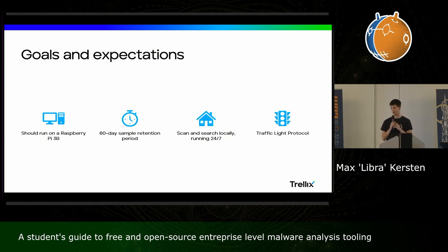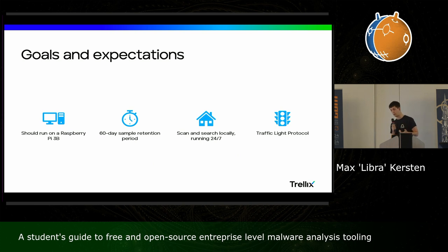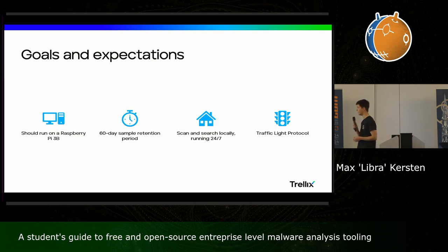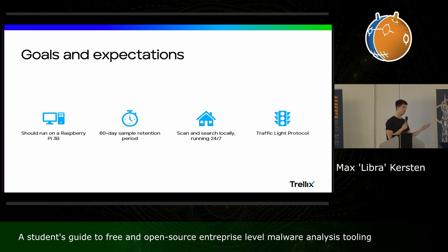What I usually use as a benchmark is a Raspberry Pi I have under my desk. It's a Raspberry Pi 3B with one gigabyte of memory, and I was aiming for roughly a 60-day sample retention period. The goal is that you can run this locally at home — whether you're a student, startup, or researcher — 24/7, without a high electricity bill and without paying a lot of money to obtain it.